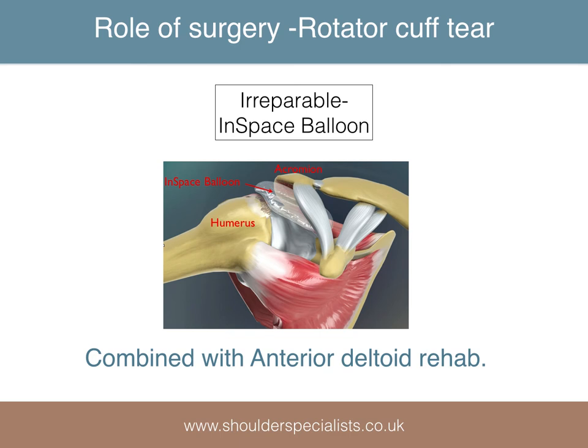Another option which has been around for some time is the use of an in-space balloon. This biodegradable device is inserted into the subacromial space arthroscopically. It starts to resorb over a few months, but during that time it reproduces the depressor effect of the torn rotator cuff, restoring balance to the shoulder, thereby facilitating rehabilitation of an anterior deltoid programme. The designer's preliminary studies and one other in Eastern Europe suggest that this technique achieves its aims in about 70% of cases.